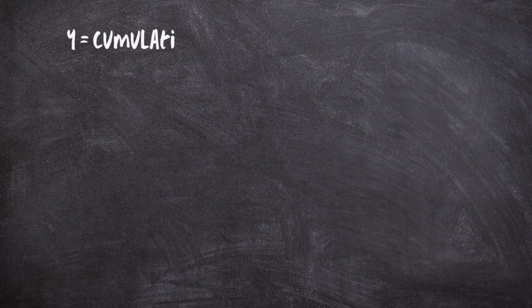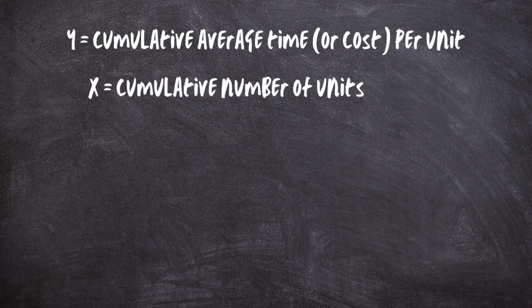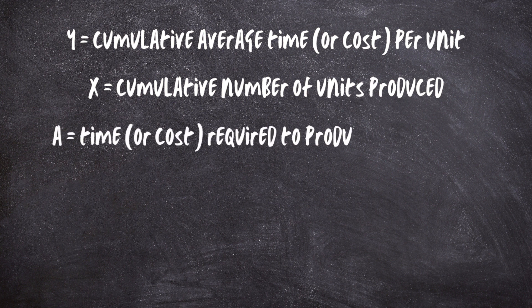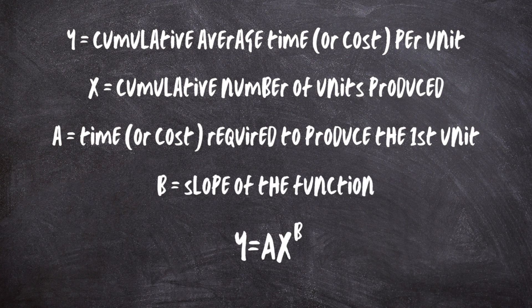If you're interested in the exact equation in Wright's Law, it goes something like this. Y equals cumulative average time or cost per unit. X equals cumulative number of units produced. A equals time or cost required to produce the first unit. B equals slope of the function. The final equation is: Y equals A times X to the power of B.